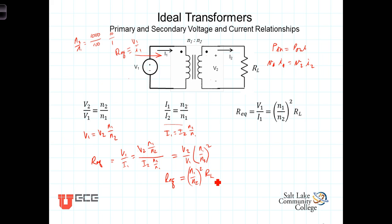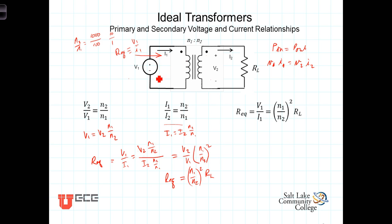This is saying that the resistance the source feels through the ideal transformer to the load will not equal R_L directly — it will feel the turns ratio squared times R_L. Thus, transformers are used, particularly in communication systems, to balance or change resistance. If we don't like the effective resistance seen by the source, that resistance can be modified using what's known as an impedance matching transformer.